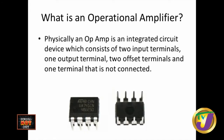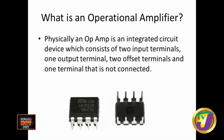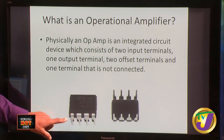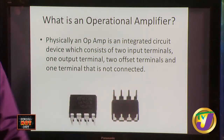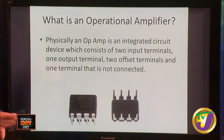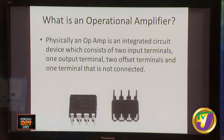Physically, an operational amplifier is an integrated circuit. IC means integrated circuit — it is an integrated device which consists of two input terminals, one output terminal, two offset terminals, and one dummy terminal, giving eight terminals total. These are just two views of what an operational amplifier looks like — these are the connections, the terminals.